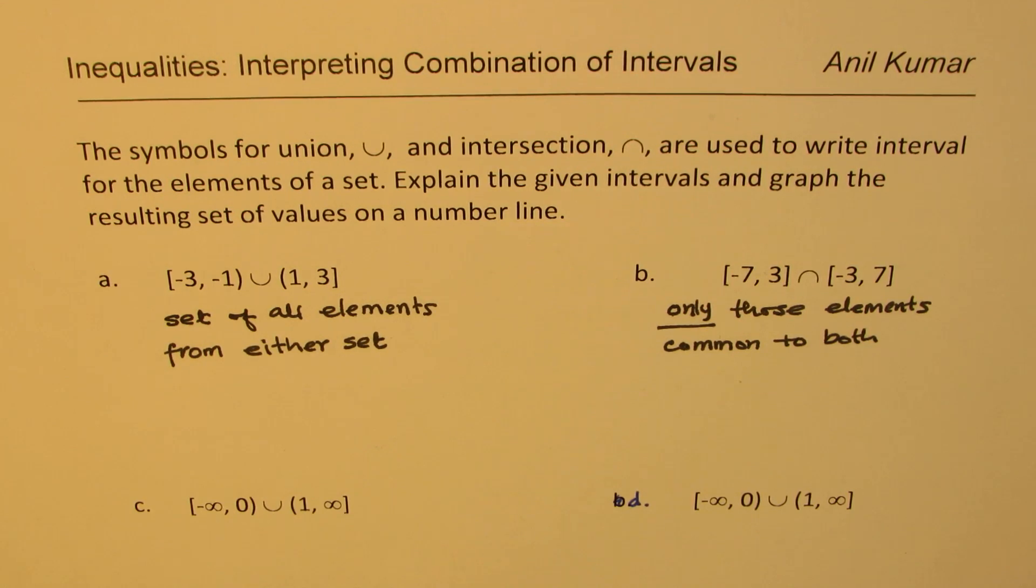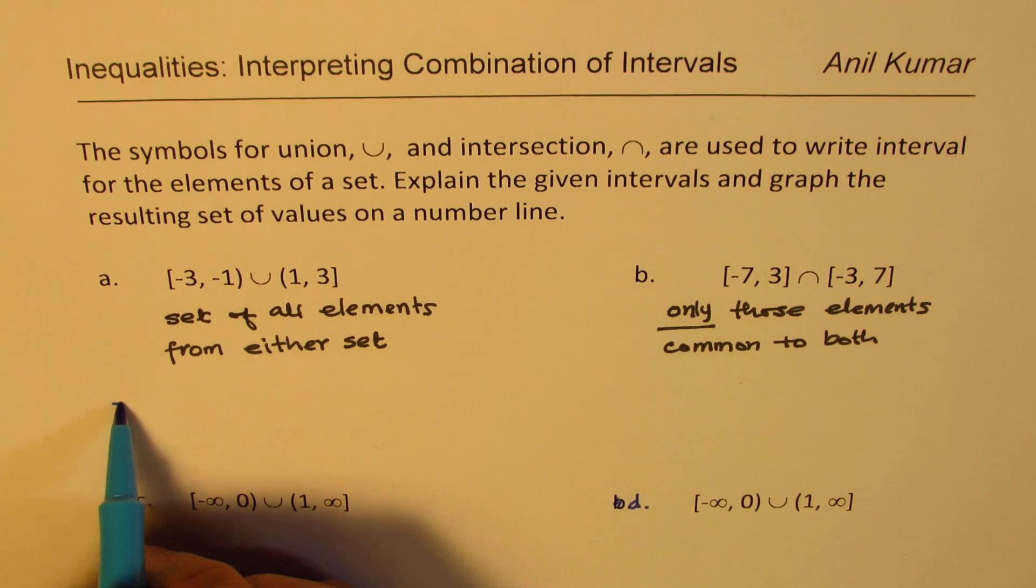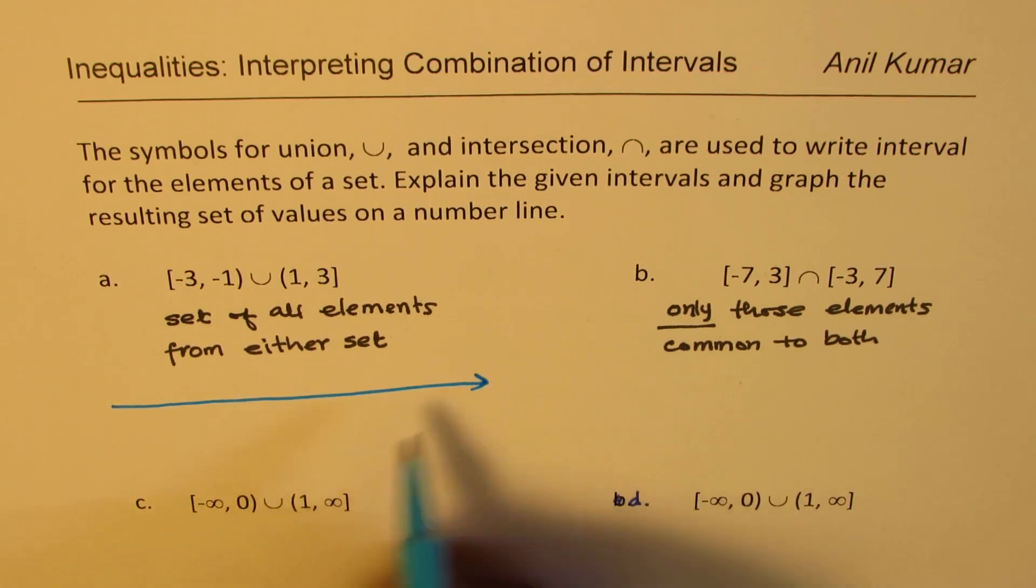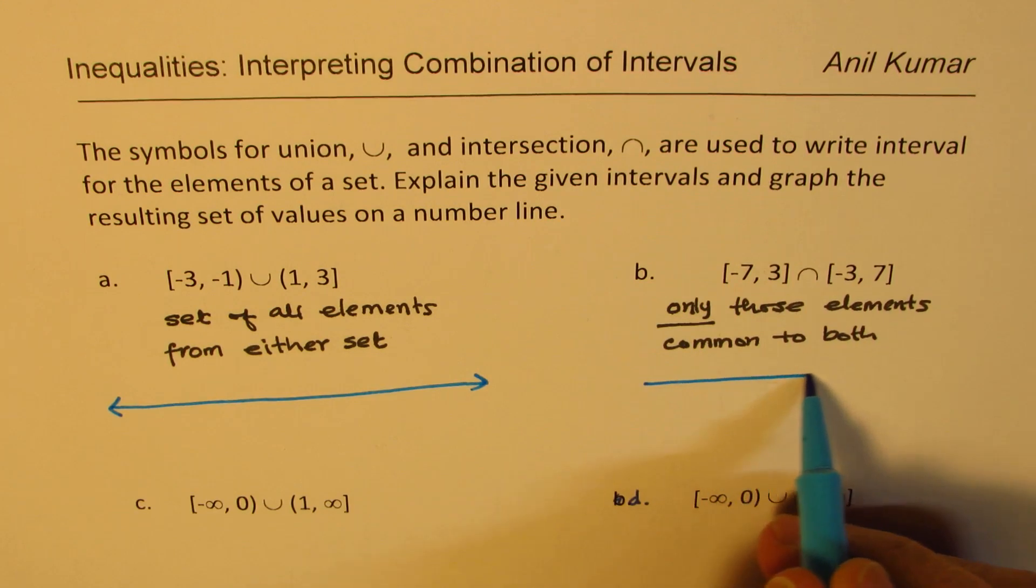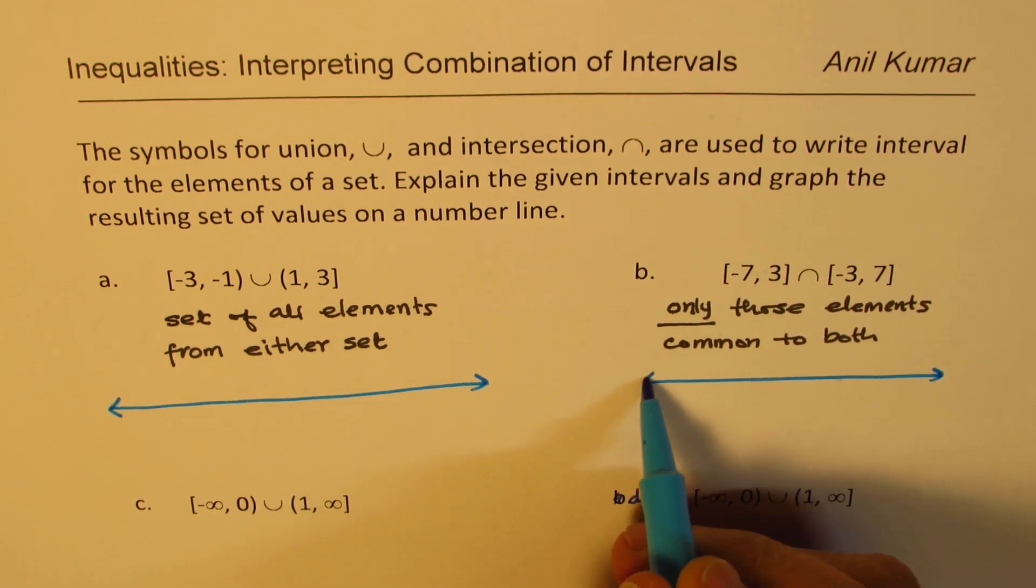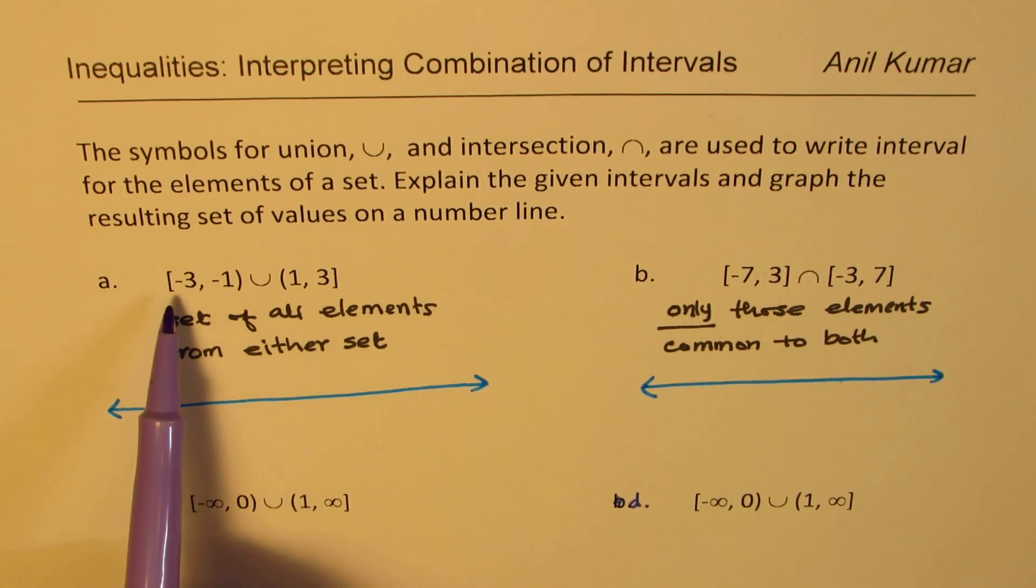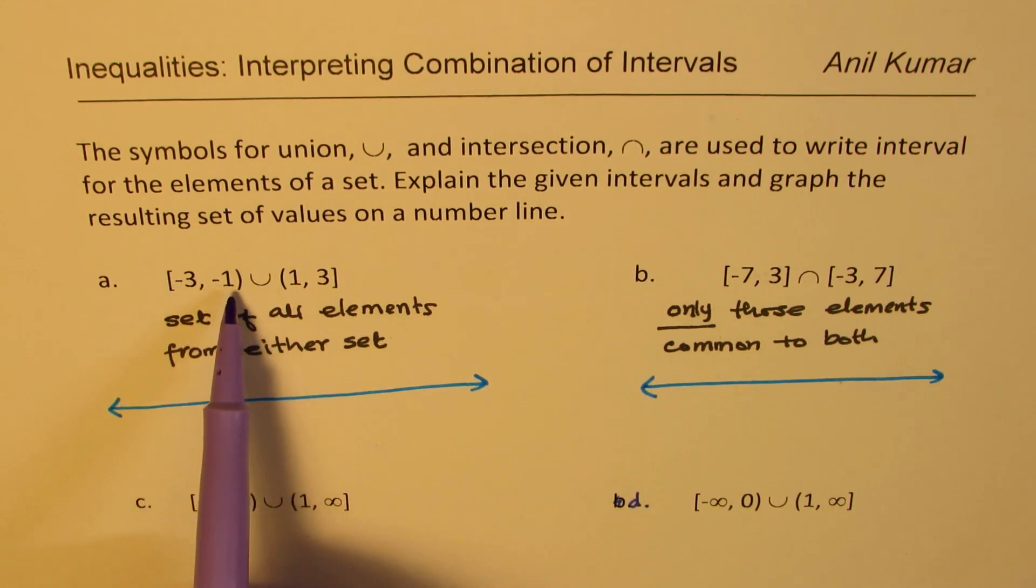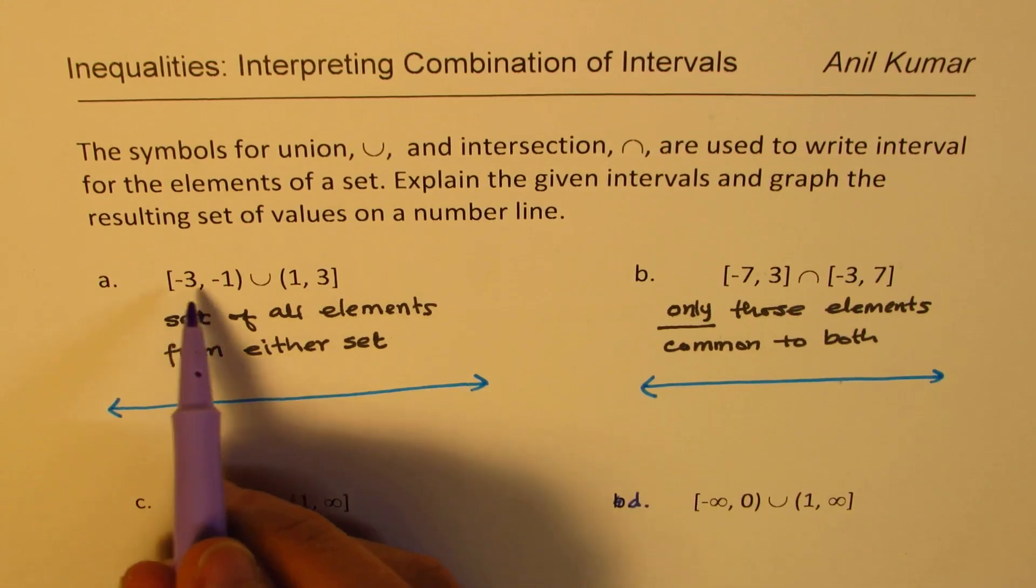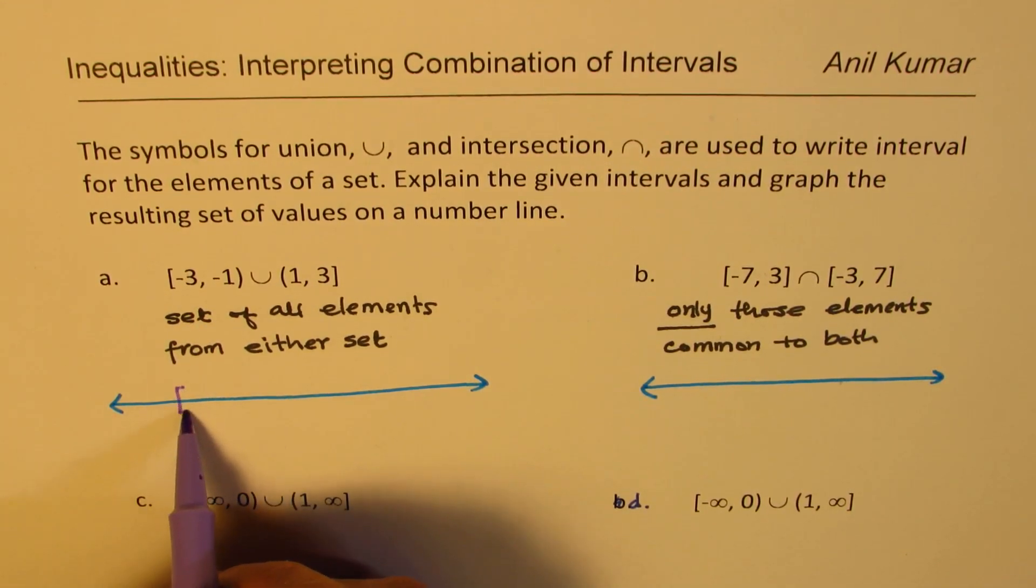On a number line, how are we going to represent them? Now, you know the meaning of this. I'd like you to pause the video and then represent the solution on a number line. So, let us first see what type of sets we are given. Here we are saying all the elements which are between minus 3 and minus 1, where minus 3 is included, this square bracket, and minus 1 is not included. So, I would say minus 3, let me say minus 3 is here, and then minus 1 is right there.